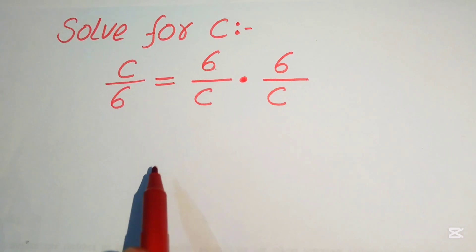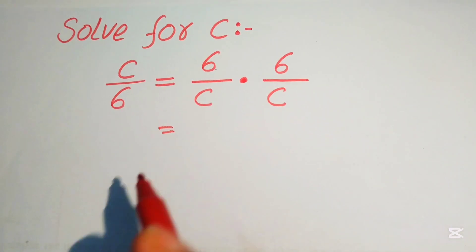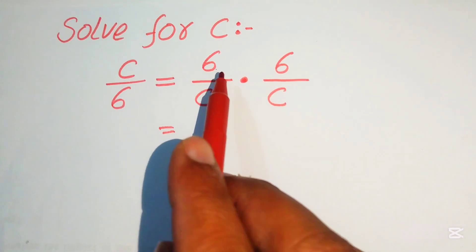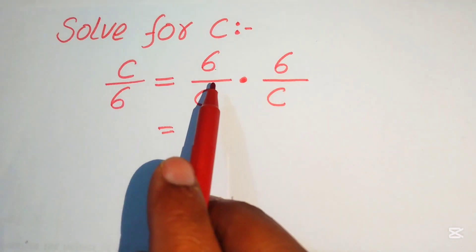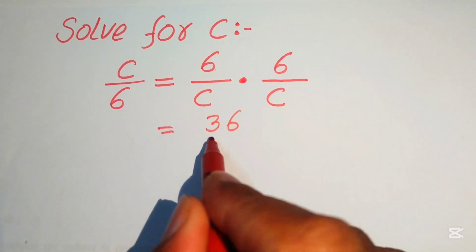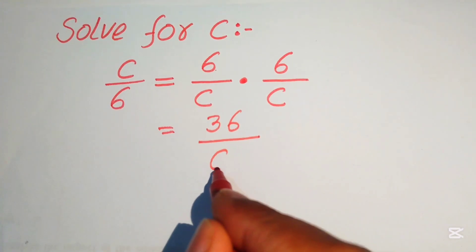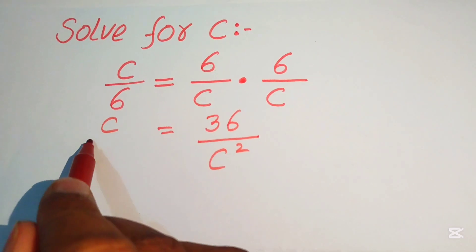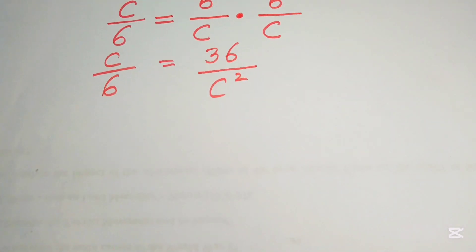First, focus on the right-hand side. This 6 is multiplied by itself two times. When you multiply numerator with numerator and denominator with denominator, you get 6 times 6 equals 36, divided by C times C equals C squared. On the left-hand side we have C over 6.